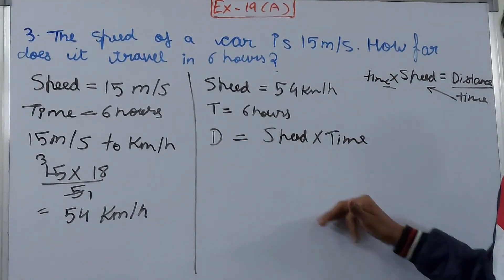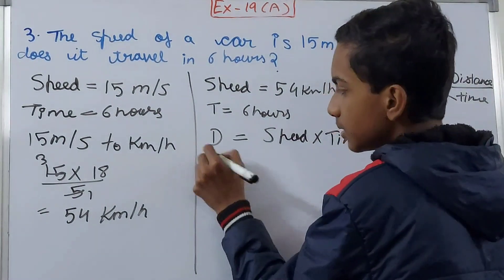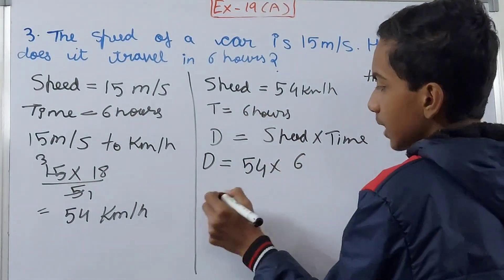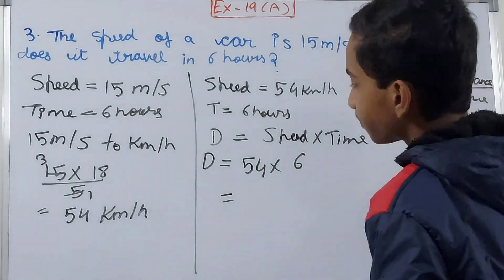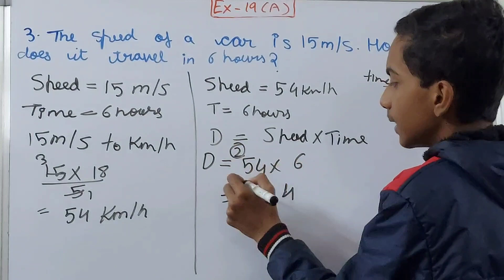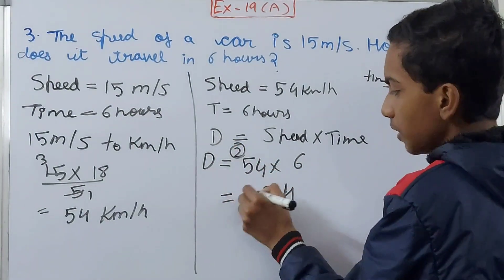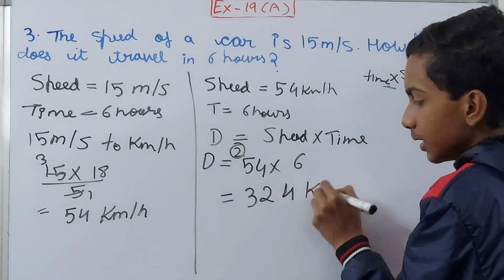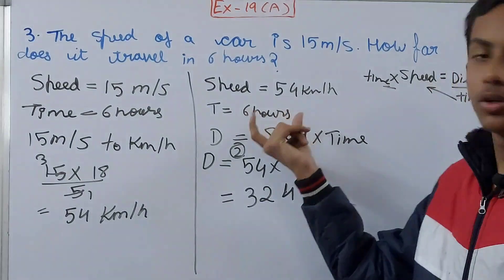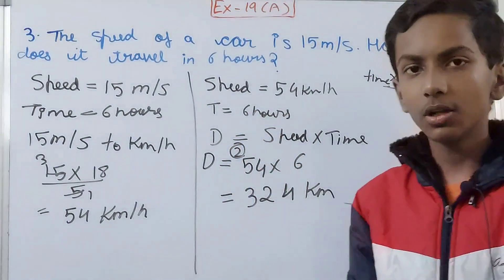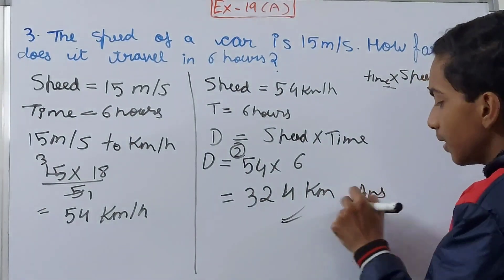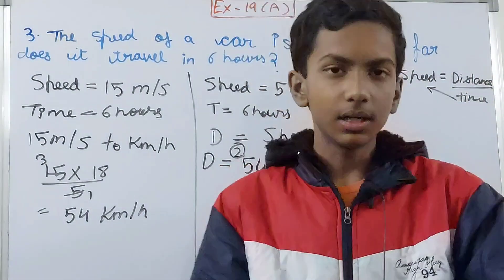Now input the values: distance equals speed of 54 kilometers per hour multiplied by time of 6 hours. 6 times 4 is 24, carry 2; 6 times 5 is 30, plus 2 is 32. So the distance is 324 kilometers. The car will travel 324 kilometers in six hours.